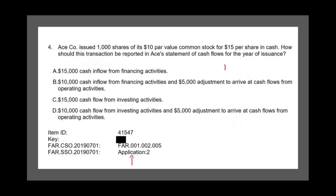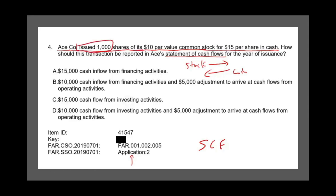Another application question. Ace Company issued 1,000 shares of its $10 par value common stock for $15 per share in cash. How should this transaction be reported in the statement of cash flow? When a company issues its own stock and receives cash, that is a financing activity — it's an inflow. So it's a $15,000 cash inflow from financing activities. That is the answer.